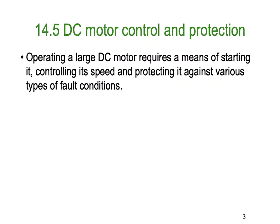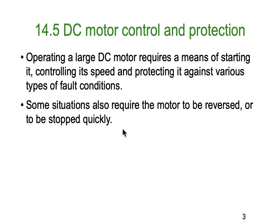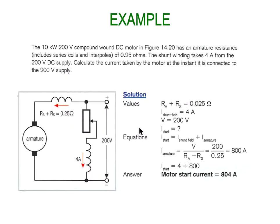Operating large DC motors requires a means of starting it, controlling its speed, and protecting it against a various range of fault conditions. Some situations also require the motor to be reversed or to be stopped quickly. We're going to look at a couple of ways you can do that. Let's have a look at a little example about motor start current.